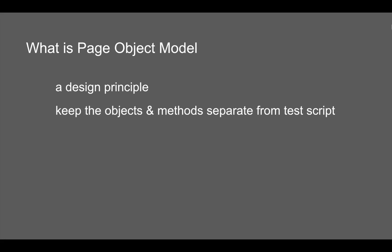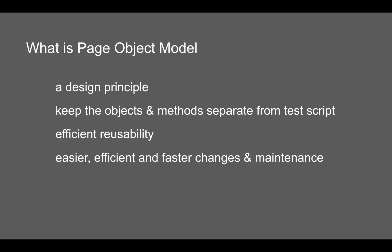the methods or the actions on the objects separate from our test script. Do not worry if you do not get this statement — I will show you in a moment how exactly this is done. This is done to make reusability very efficient, reuse all our objects and methods, and also to make our testing and maintenance easier, efficient, and faster. Let us look at a demo and everything will be very easy to understand.